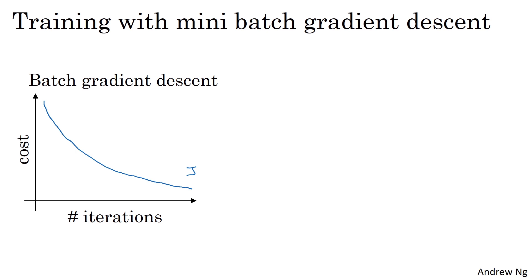And if it ever goes up even on one iteration, then something's wrong, maybe the learning rate's too big. On mini-batch gradient descent though, if you plot progress on your cost function, then it may not decrease on every iteration.